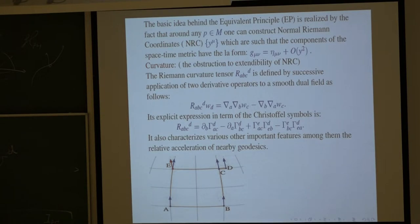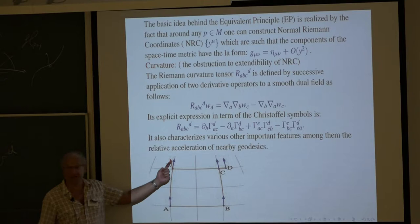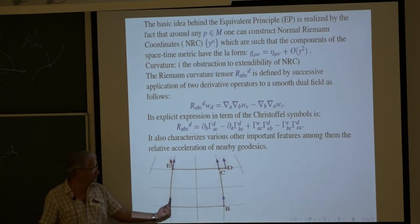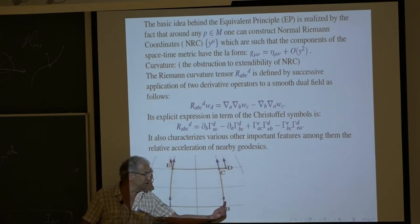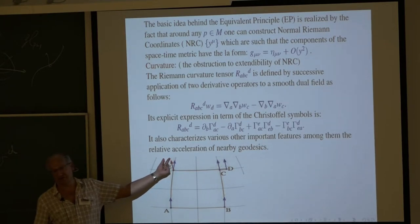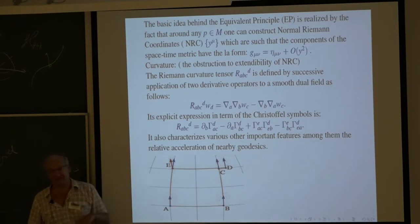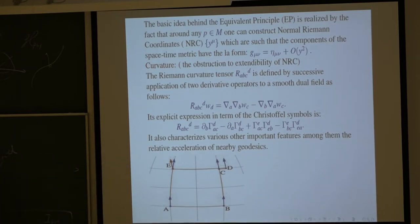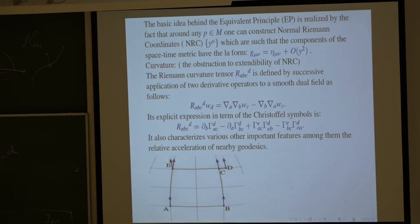This object characterizes various important features. It tells you the relative acceleration of nearby geodesics. It tells you about the non-commutativity of parallel transport: take a vector transported parallel along one geodesic, then back along another — the difference at lowest order is given by this curvature tensor. More importantly, at the conceptual level, the non-vanishing of the curvature tensor represents the unique obstruction to extending Minkowski coordinates or normal Riemann coordinates to a larger set.